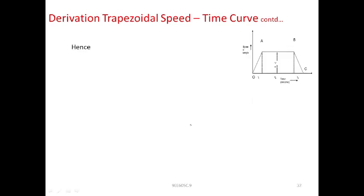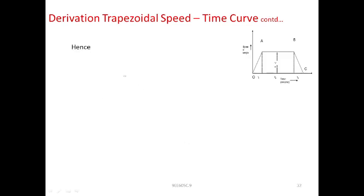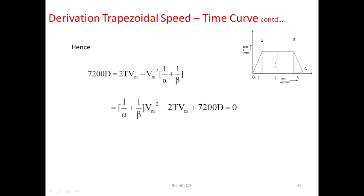Rearranging equation 1 by multiplying both sides, we get 7200D = 2T·Vm minus Vm² times (1/α + 1/β). Moving all terms to one side and substituting K = 1/α + 1/β, we obtain: K·Vm² minus 2T·Vm plus 7200D = 0.